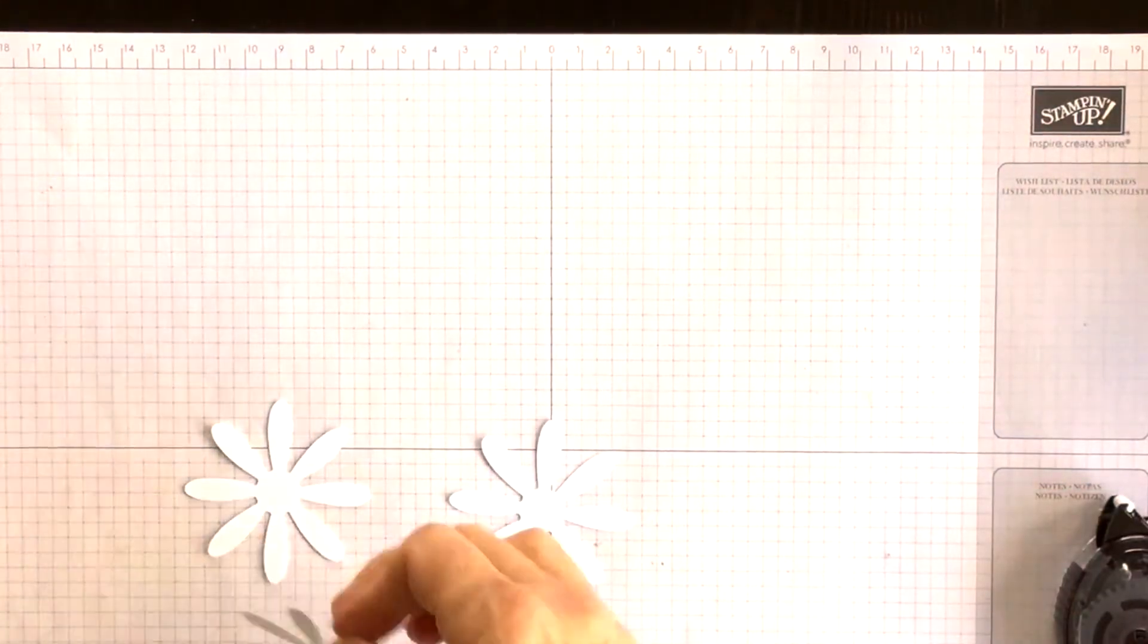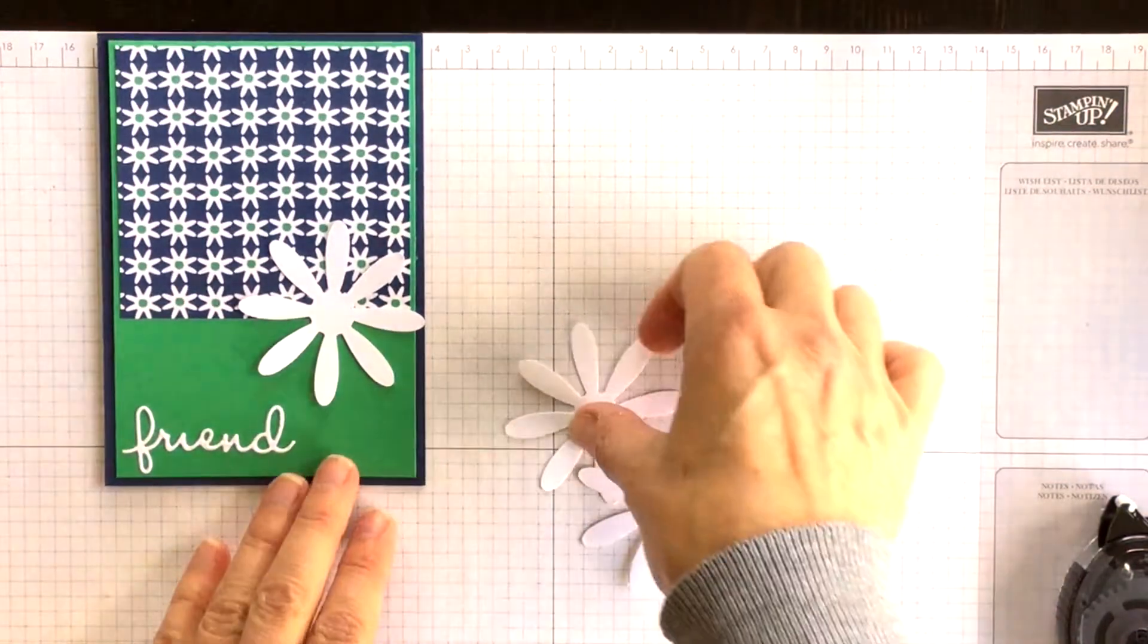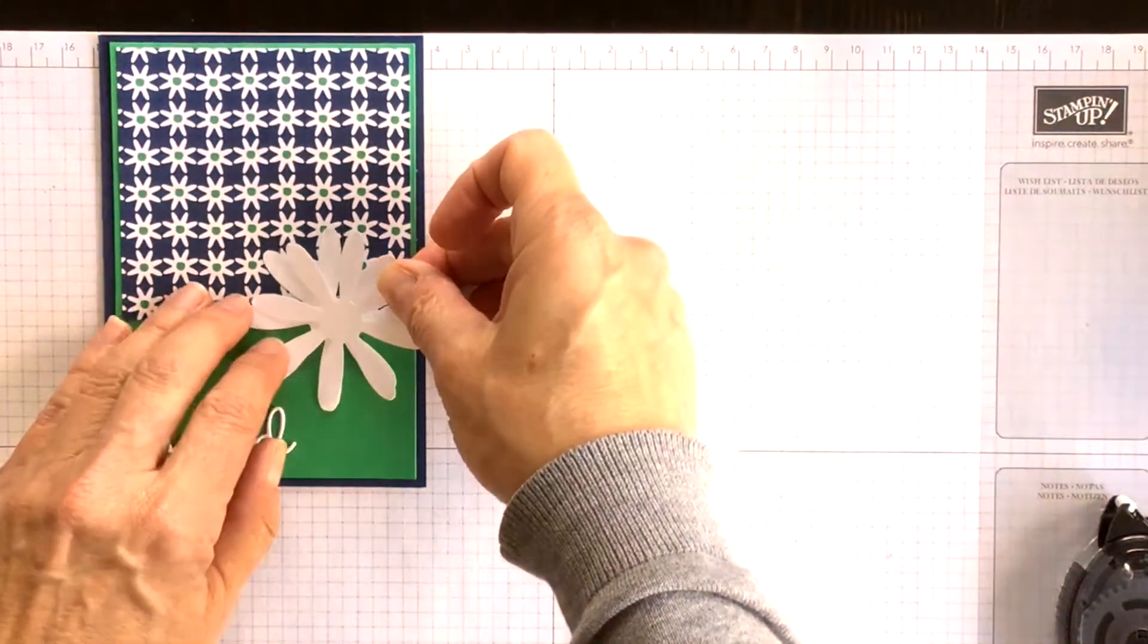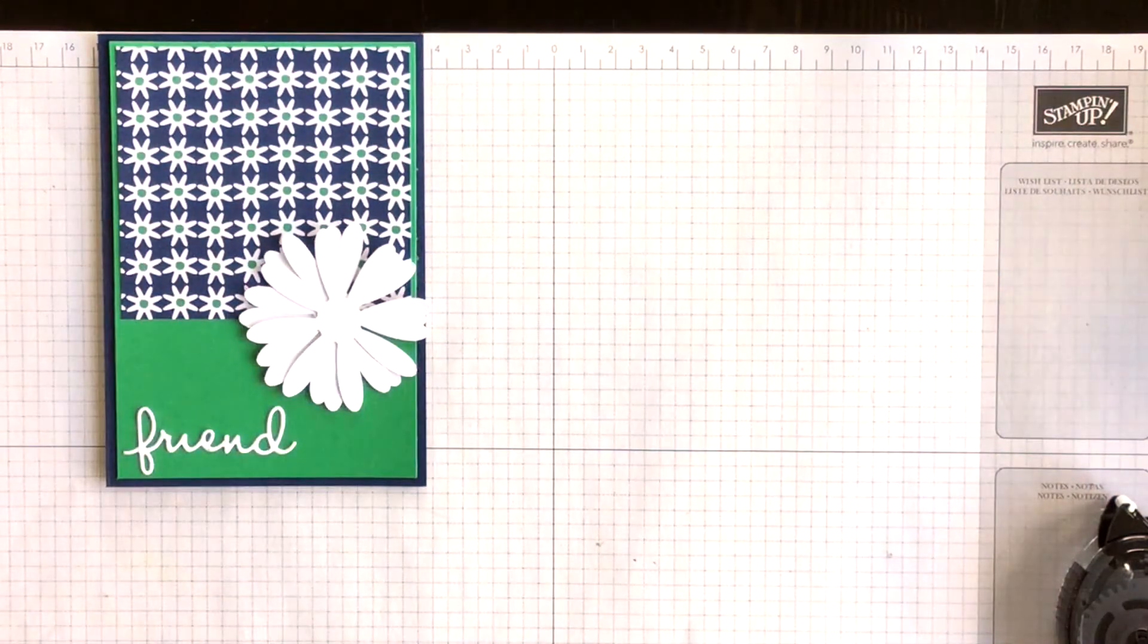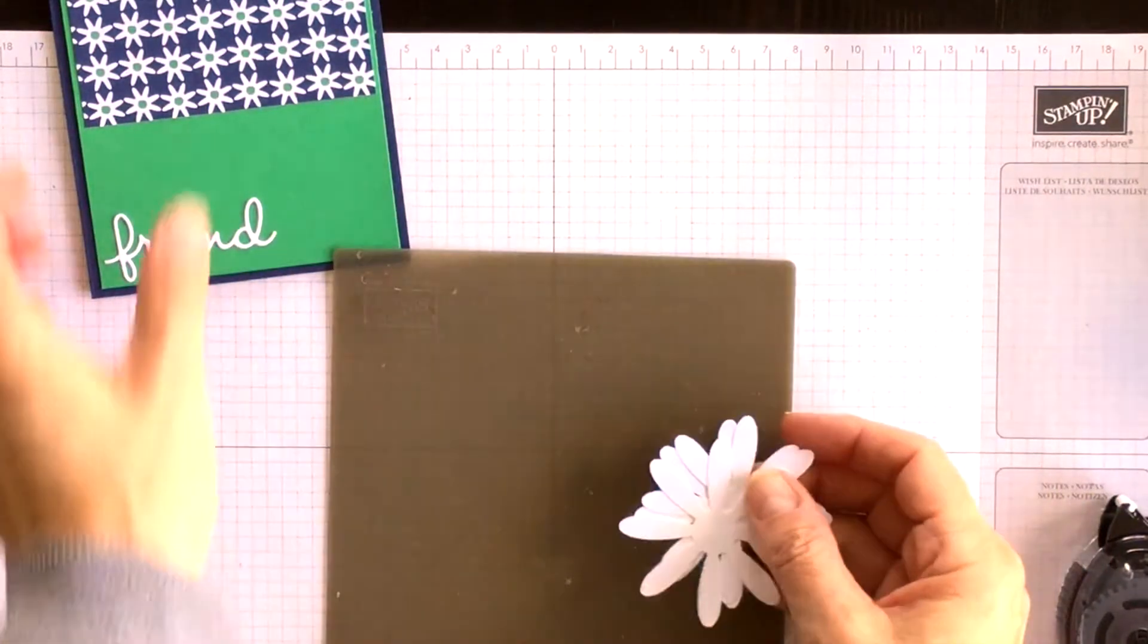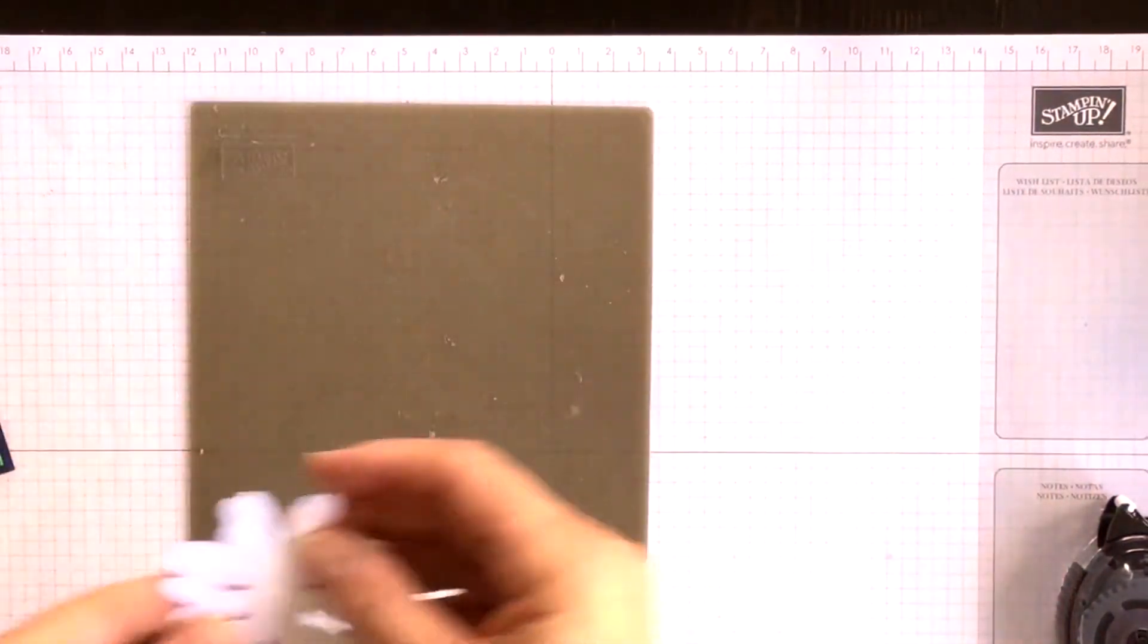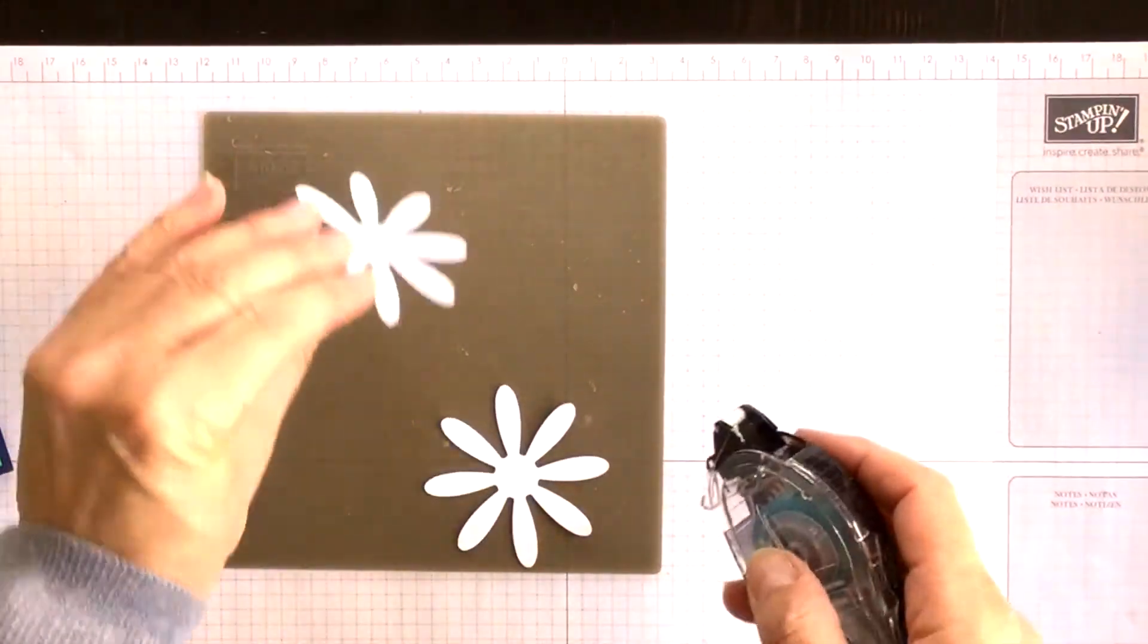If I did one daisy it really doesn't stand out too nicely, but if you layer the daisies then you get something that's really nice and full and fun to use as an embellishment. So I'm going to bring in my silicone sheet here and I'm going to attach my daisies together using Snail Adhesive.